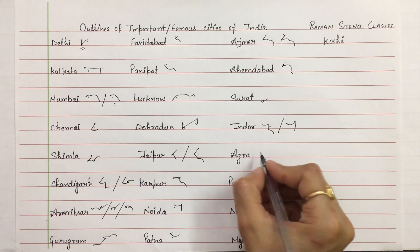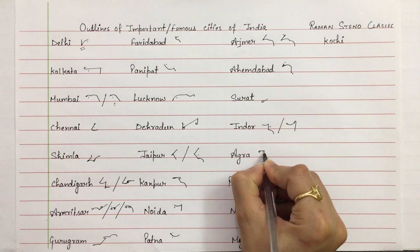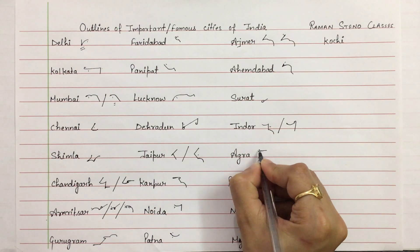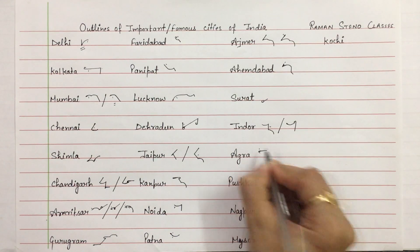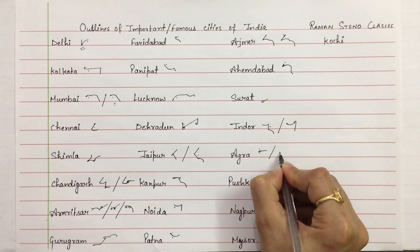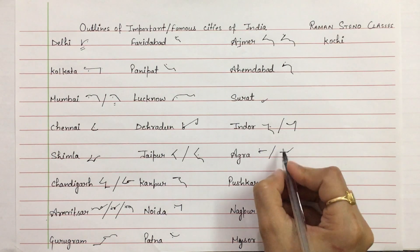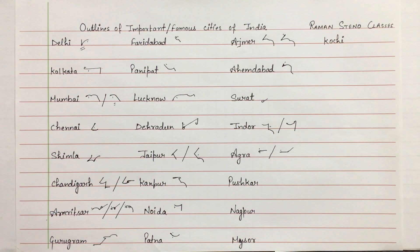Agra — employing hook R with G. Agra. Or you can use Re with G. Agra.